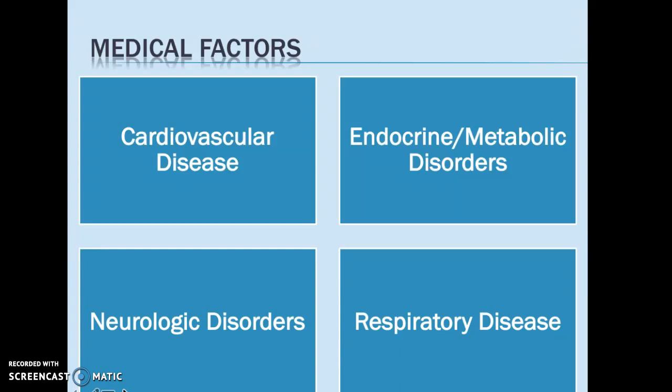Looking at medical factors associated with experiencing anxiety, some of them really make sense. If you think about the physiological experience of anxiety — shortness of breath, the pounding heart — those can sometimes flip-flop and actually be a medical cause experienced as anxiety-provoking. If someone has a respiratory illness where they can't breathe well, they're more likely to endorse symptoms of anxiety. Cardiovascular issues like arrhythmia increase the risk of anxiety. Endocrine or metabolic disorders, specifically thyroid issues, as well as neurologic disorders — patients with seizure disorders or traumatic brain injury — will have a predisposition to experiencing anxiety.